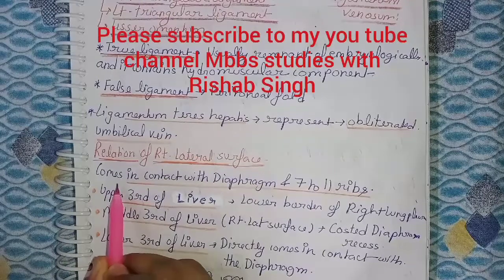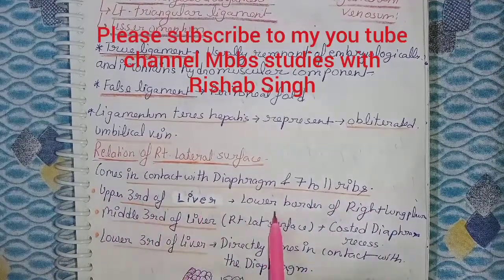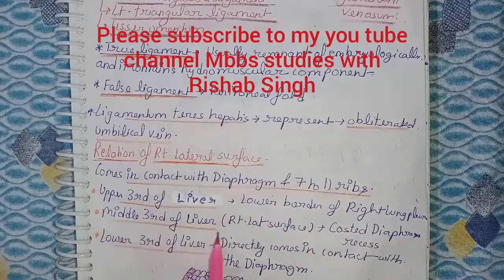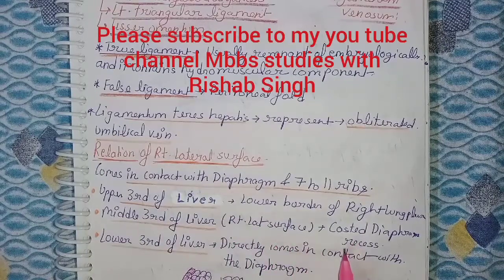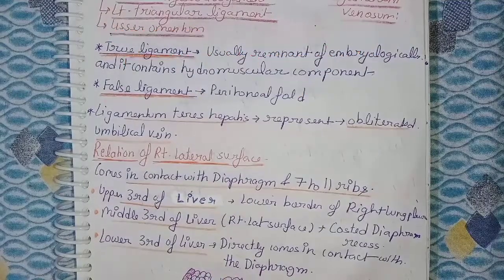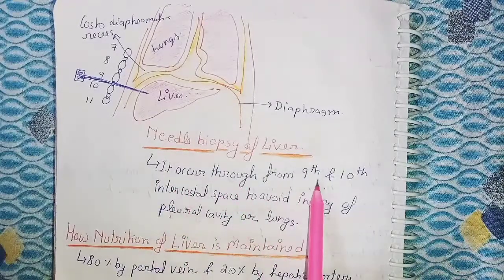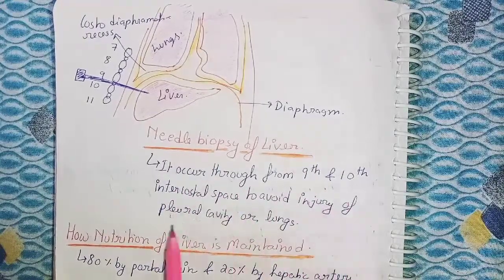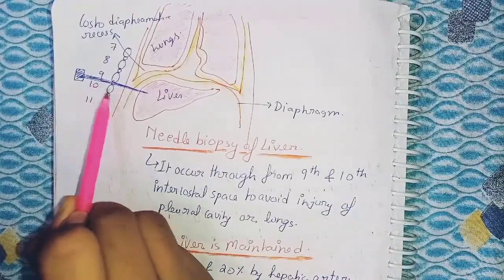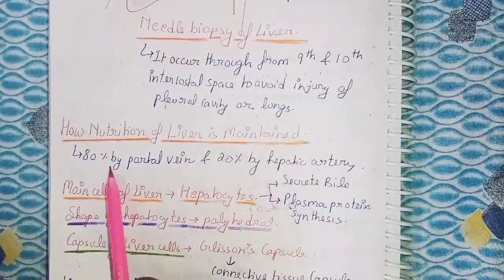Relations of the right lateral surface: the liver comes in contact with the diaphragm and the seventh to eleventh ribs. The upper third of the liver is related to the lower border of the right lung and pleura. The medial third is related to the costodiaphragmatic recess. The lower third of the liver comes directly in contact with the diaphragm. For a needle biopsy of the liver, it is performed through the ninth and tenth intercostal space to avoid injury to the pleural cavity or lungs.